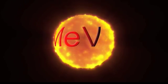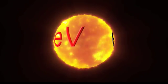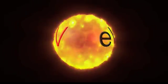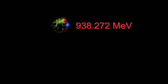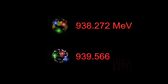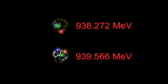Using these units, here are some facts that will come in handy. The rest mass of the proton is 938.272 MeV. The rest mass of the neutron is 939.566 MeV.